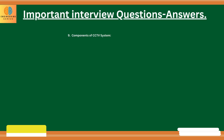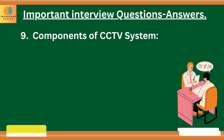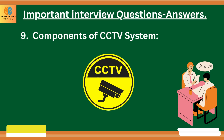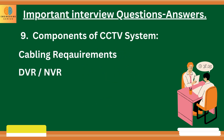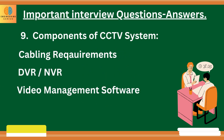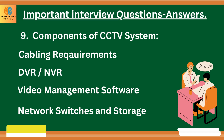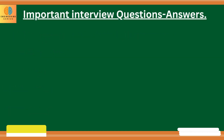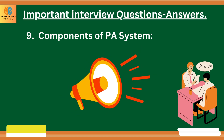Another question can be about the components of CCTV system — you should explain the types of CCTV cameras, cabling requirements, DVR or NVR types, video management software, network switches and storage devices. Another question can be about the components of public address system — you should explain the types of speakers, microphones, cabling requirements, amplifiers and mixers, control panels, power supply, and recording and playback devices.